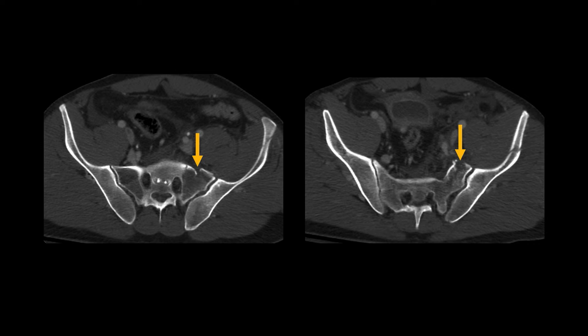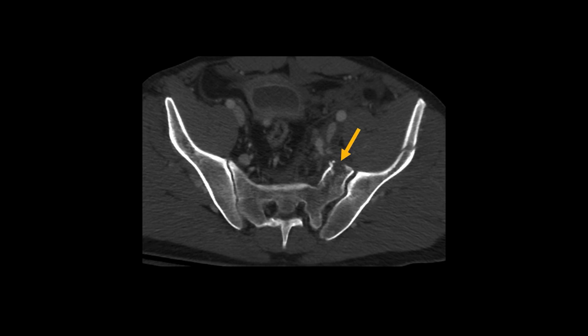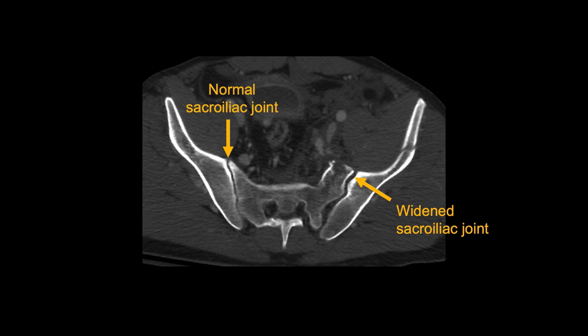These injuries can also be associated with widening of the sacroiliac joint. In this patient, there is injury to the left sacrum, with cortical irregularities and linear defects extending deeper into the trabecular bone. The sacroiliac joint is slightly wider on the left than on the right, but it is a fairly subtle difference in this case.